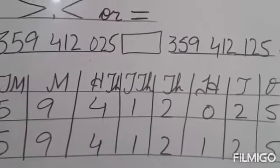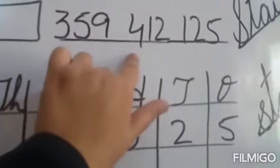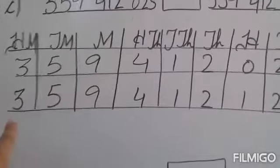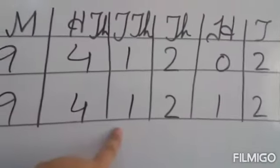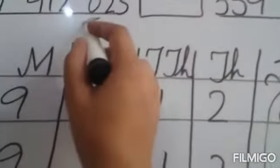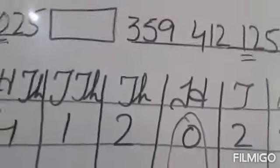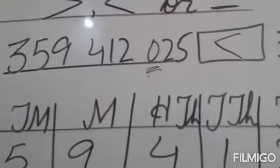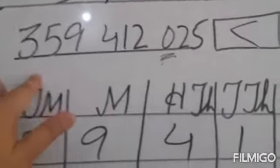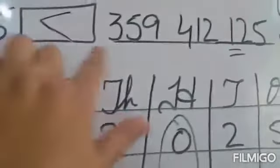Question C: 359,412,025 and 359,412,125. By putting these in the place value chart, at 100 millions, 10 millions, millions, 100,000's, 10,000's, and 1,000's — both numbers are the same. But at the 100's place value the numbers are different. The number having 0 at 100's place is less than the number having 1 at 100's place. So 359,412,025 is less than 359,412,125.